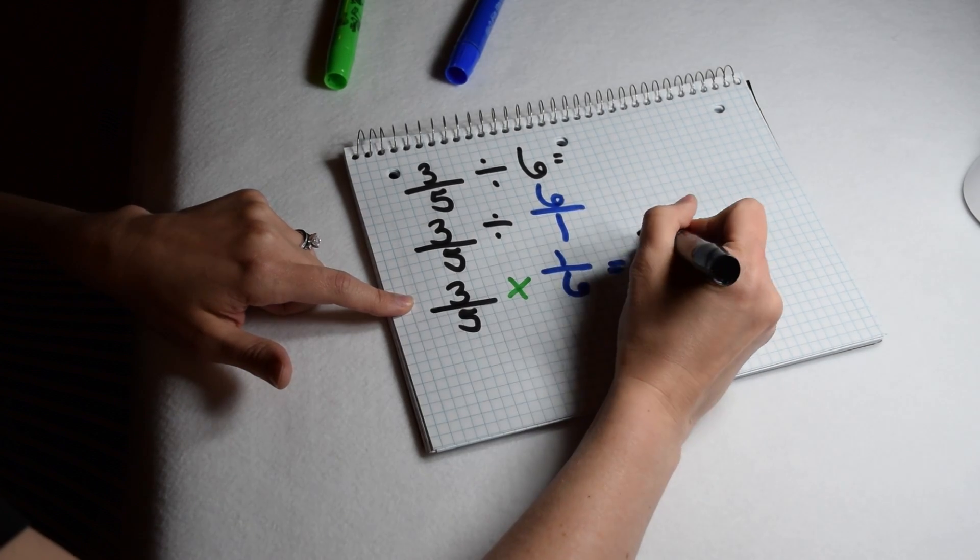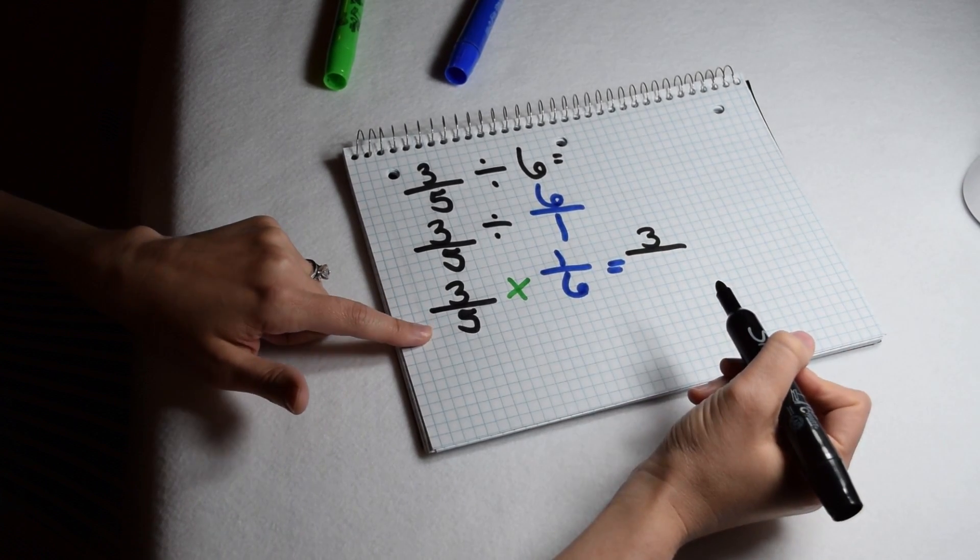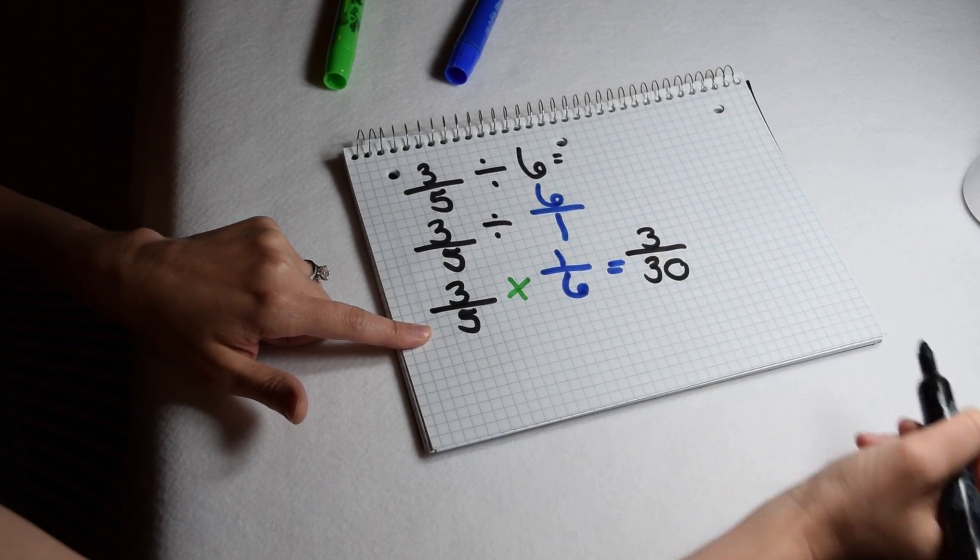When we multiply our numerators together, three times one gives us three. Multiplying our denominators, five times six gives us thirty.